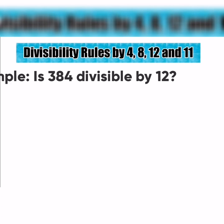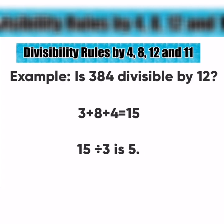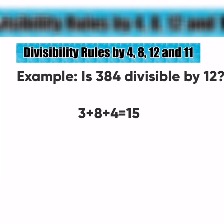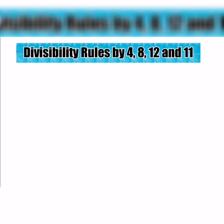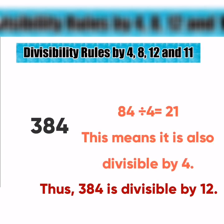For example, is 384 divisible by 12? Let's see first if it is divisible by 3. 3 plus 8 plus 4 equals 15. 15 divided by 3 is 5. This means 384 is divisible by 3. Now let's see if it is divisible by 4. 384 ends in 84. 84 divided by 4 equals 21. This means it is also divisible by 4. Thus, 384 is divisible by 12.